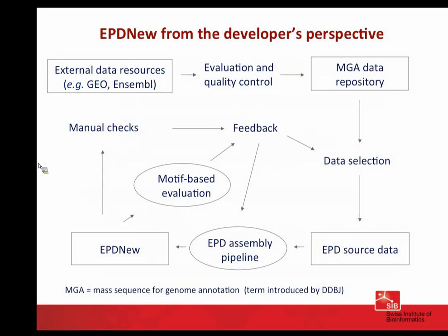From the developer's perspective, data come from public repositories such as GEO or ENCODE. ENCODE we use basically for gene catalogs. We make a preliminary evaluation before incorporating data into the repository, then make a data selection — these are the EPD source data. We run the EPD assembly pipeline; the output is a list of transcription start sites or start site clusters. We then check it in two ways: automatically, by looking at over-represented motifs expected in promoters, and manually, by looking at randomly selected promoters in a UCSC browser window.